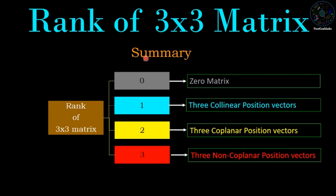Summary for 3×3 matrices: If the rank is 0, the matrix is the zero matrix. If the rank is 1, the matrix is made by 3 collinear position vectors. If the rank is 2, the matrix is made by 3 coplanar position vectors. If the rank is 3, the matrix is made by 3 non-coplanar position vectors.